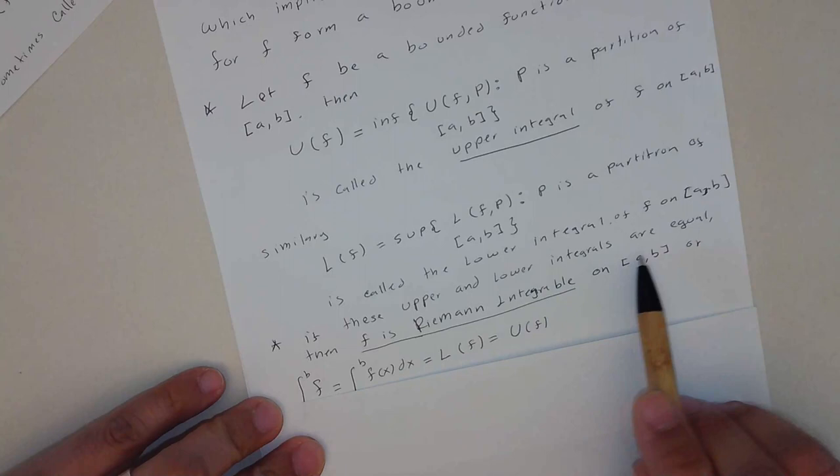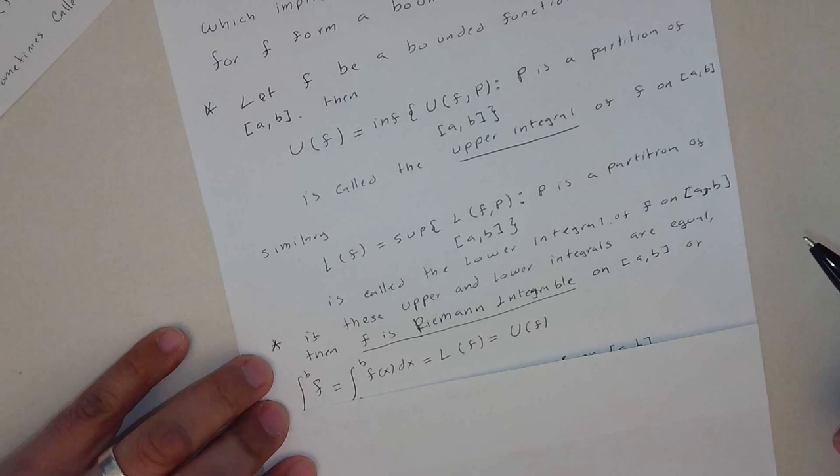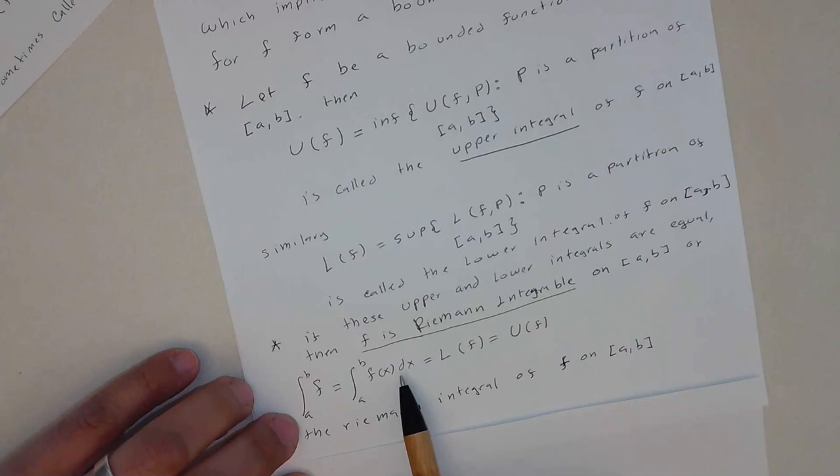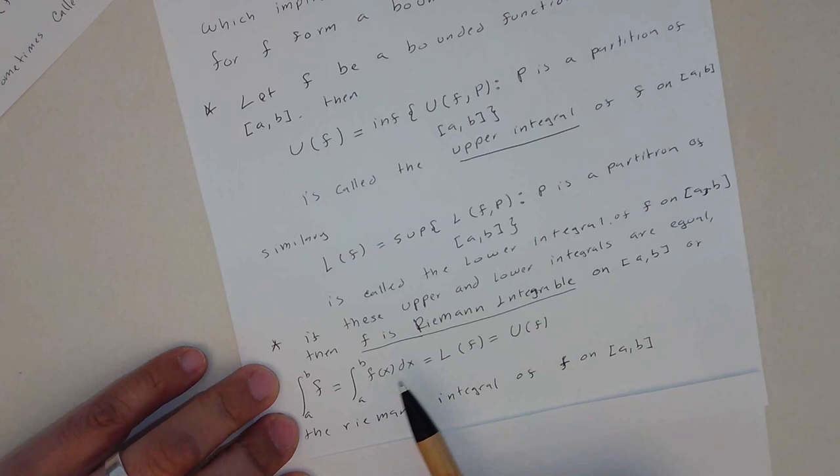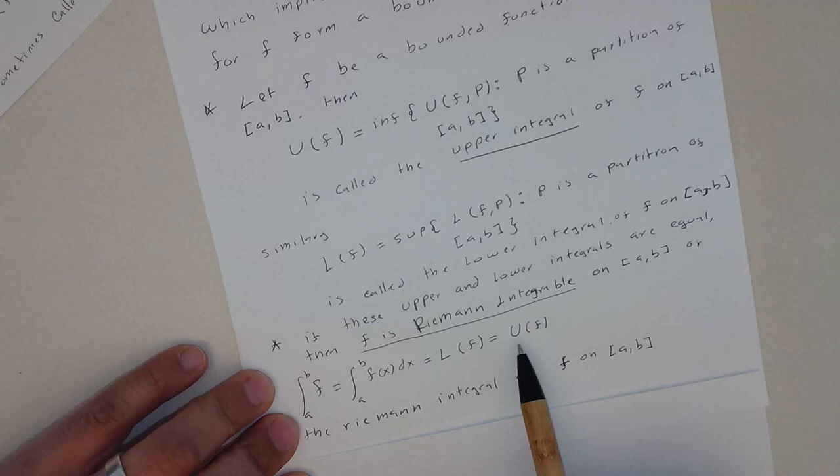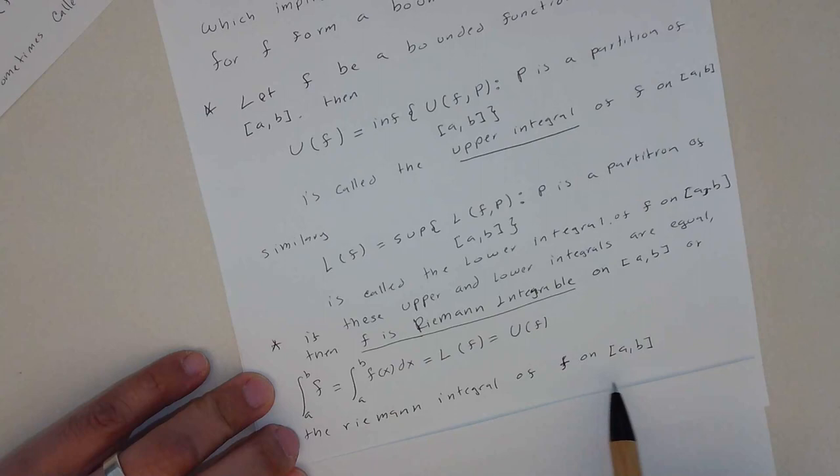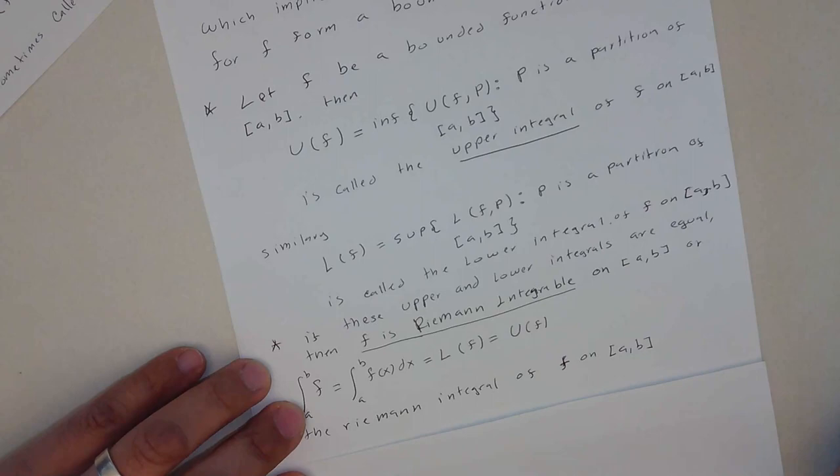This is the upper and lower integral. If they're equal to f, then basically f is the Riemann integral on [a,b]. Or we can just write the nomenclature that we already know of an integral. And this is only the case whenever the lower integral is the same as the upper integral. The Riemann integral of f on [a,b] is this.